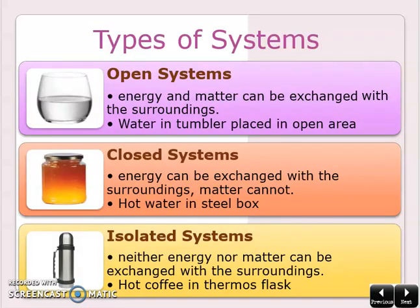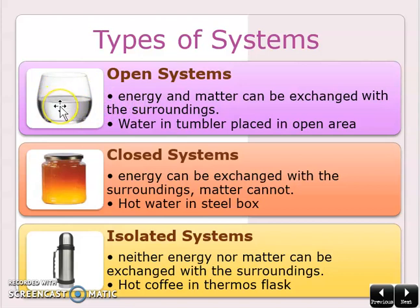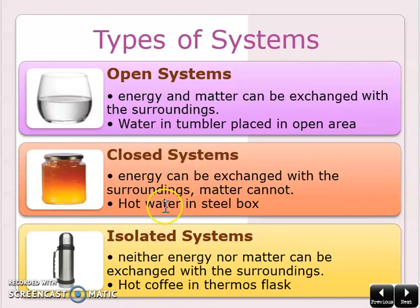Next, let's look at the types of system. We have three types of system. The first one is the open system, where energy and matter can be exchanged with the surrounding — thermal energy from hot water can leave the system, and matter, referring to water molecules, can also leave. Next is the closed system, where energy can be exchanged with the surrounding but matter cannot. And for an isolated system, neither energy nor matter can be exchanged with the surrounding.